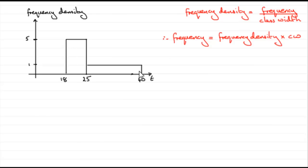Why? Because you should know that frequency density equals frequency divided by class width. And if you rearrange this equation, you get that frequency equals frequency density times class width. And by doing frequency density times class width, you've got the area of your block.